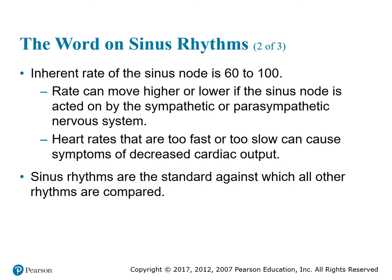Heart rate of a sinus node is anywhere from 60 to 100 beats per minute. The rate can move higher or lower if the sinus node is acted on by the sympathetic or parasympathetic nervous system — meaning your fight-or-flight or your feed-and-breed response. Heart rates that are too fast or too slow can cause symptoms of decreased cardiac output. Sinus rhythms are the standard against which all other rhythms are compared.